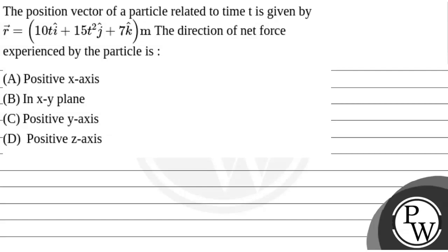Hello Bacho, let's read the question. This question may be given as: the position vector of a particle related to time t is given by R vector equals 10t i cap plus 15t square j cap plus 7k cap meter. The direction of net force experienced by the particle is what?